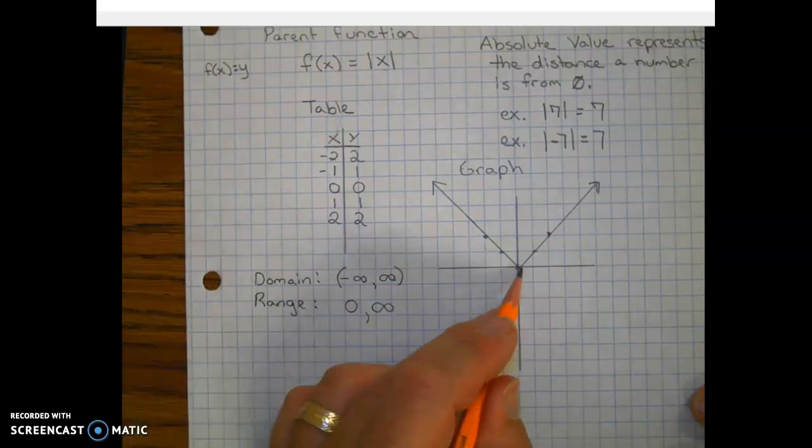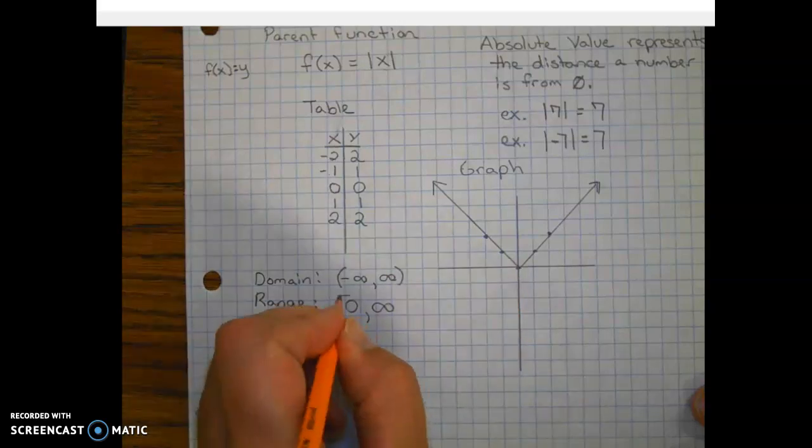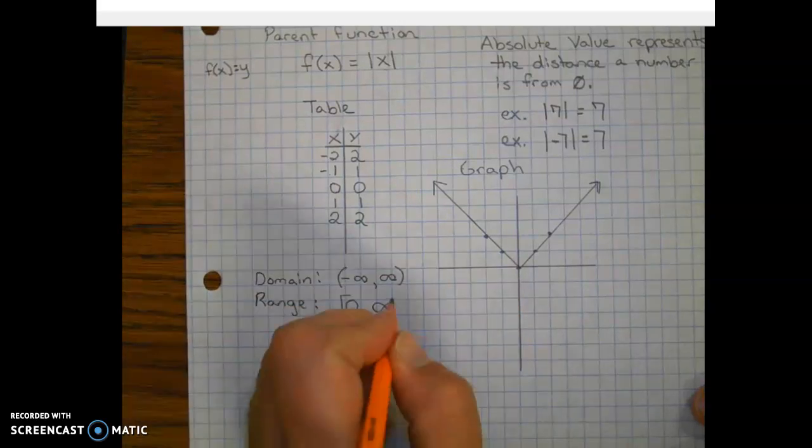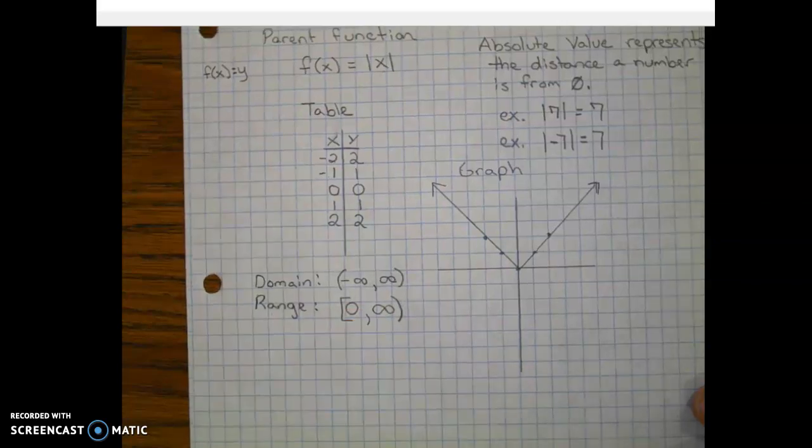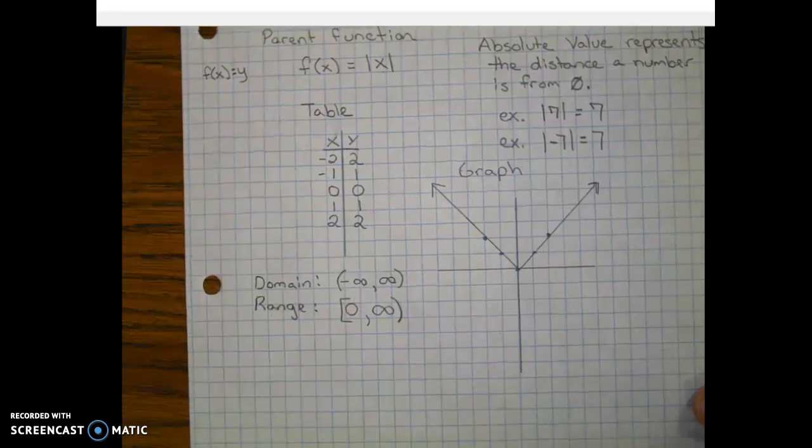So this is a closed dot. And if you couldn't see a dot here, it would be solid. So we're going to use a bracket. And infinity never gets a bracket in interval notation.